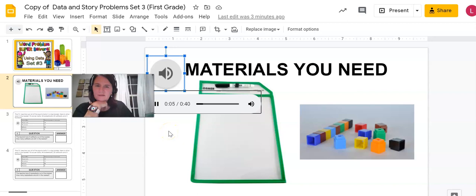You will need your write and wipe sleeve with a white piece of paper inserted on the inside for your scratch work. You will also need your unifix cubes, your snap cubes from your digital learning tub.